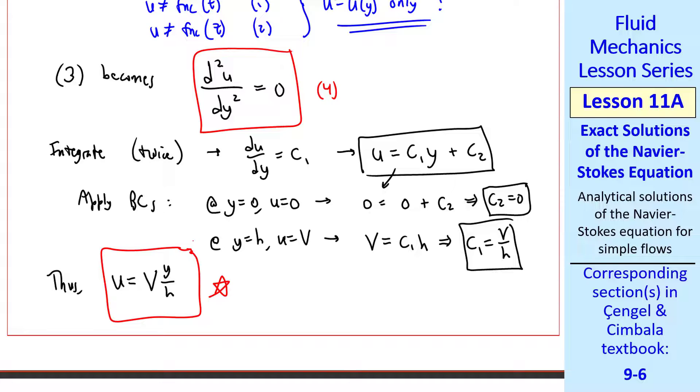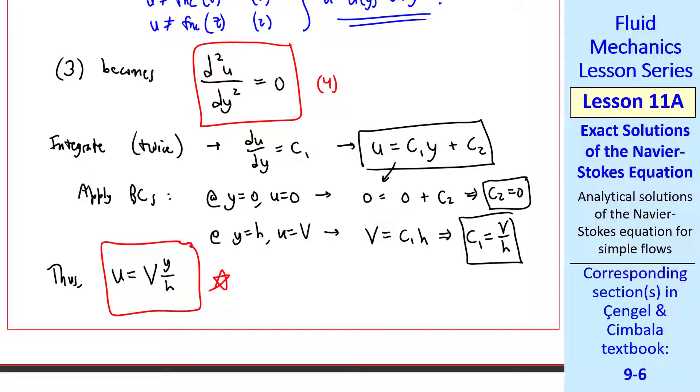Thus, we have our final expression for the velocity component in the x direction: u equals v times y over h. You may recall we used this equation in a previous lesson, and I promised I would show you where this came from. Well, here it is.